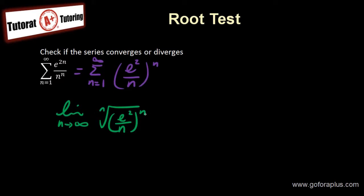So the nth root and n to the power of n, they cancel out, right? So this cancels out. What is left is just the limit of n approaching to infinity e to the 2 over n.